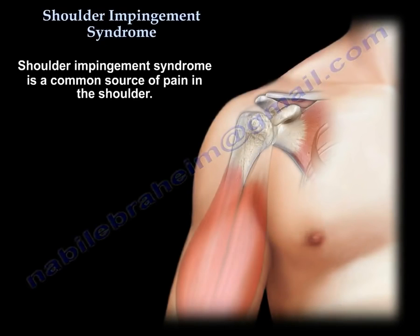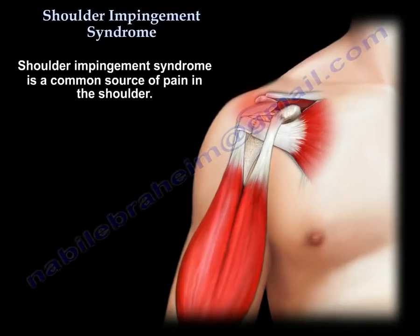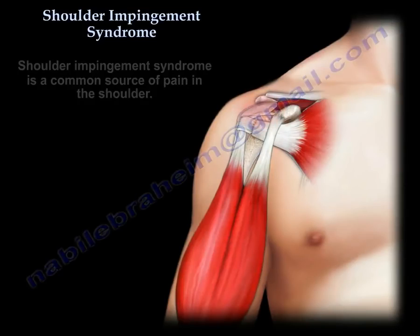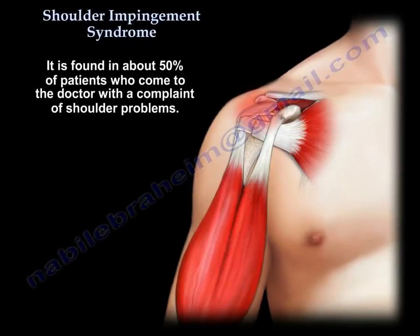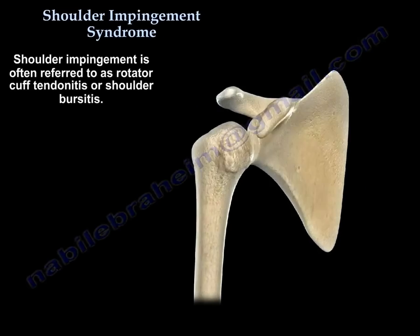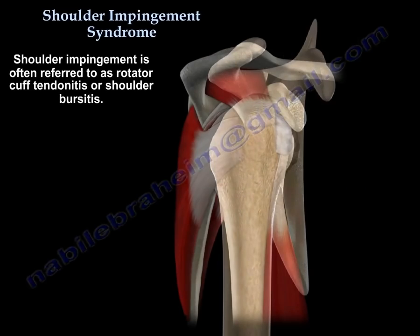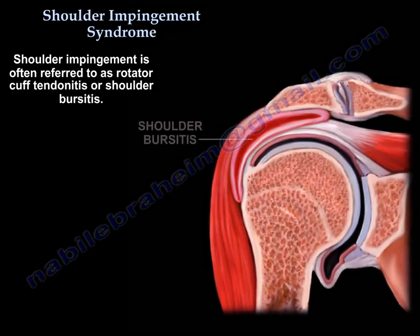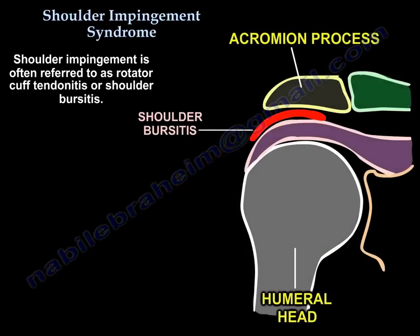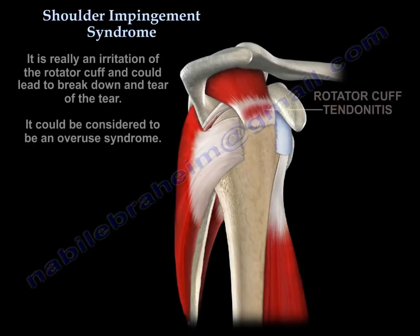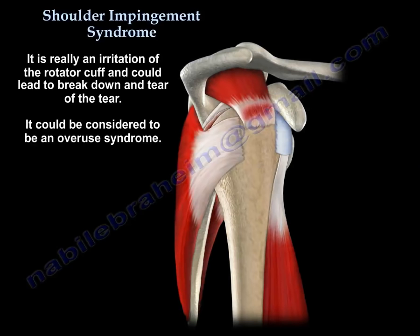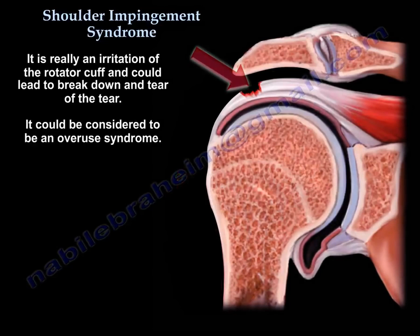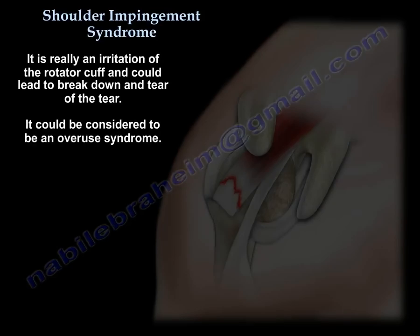Shoulder impingement syndrome is a common source of pain in the shoulder, found in about 50% of patients coming to the doctor with a shoulder complaint. Sometimes we call it cuff tendinitis or shoulder bursitis — patients are more familiar with shoulder bursitis, so we use that term. It's really an irritation of the rotator cuff and can lead to breakdown and tear of the tendon. It could be considered an overuse syndrome.